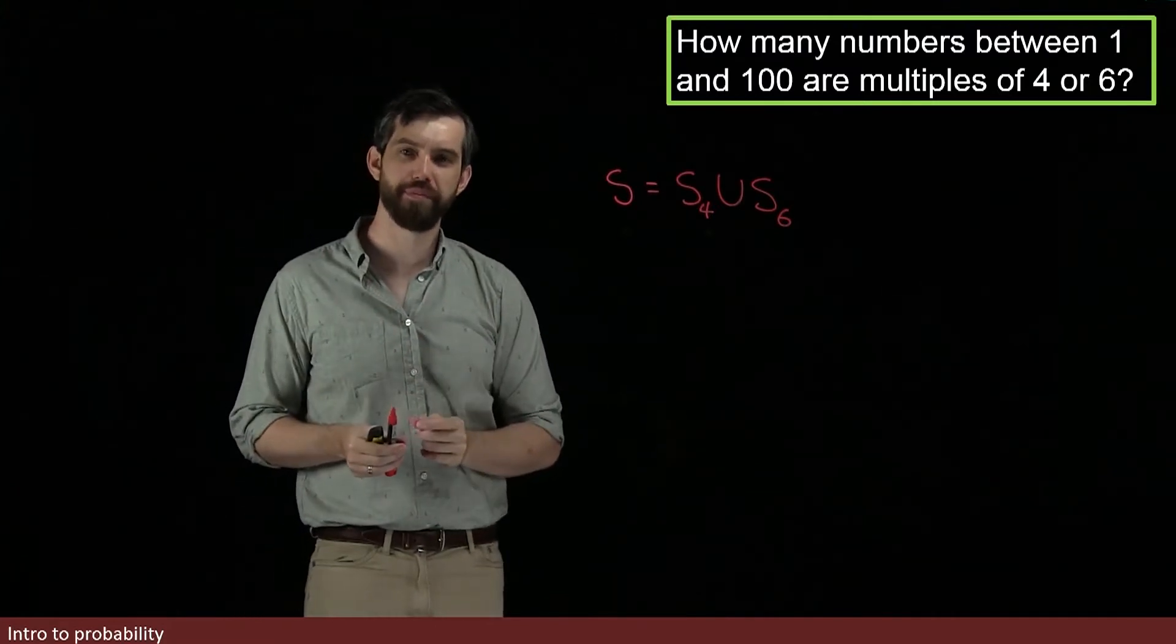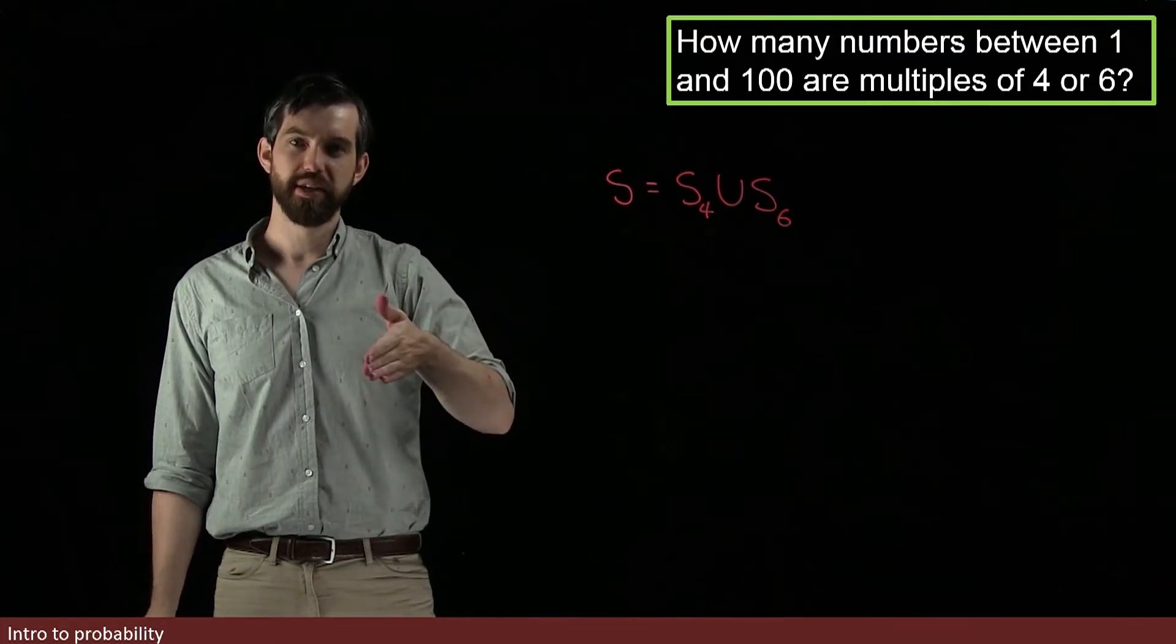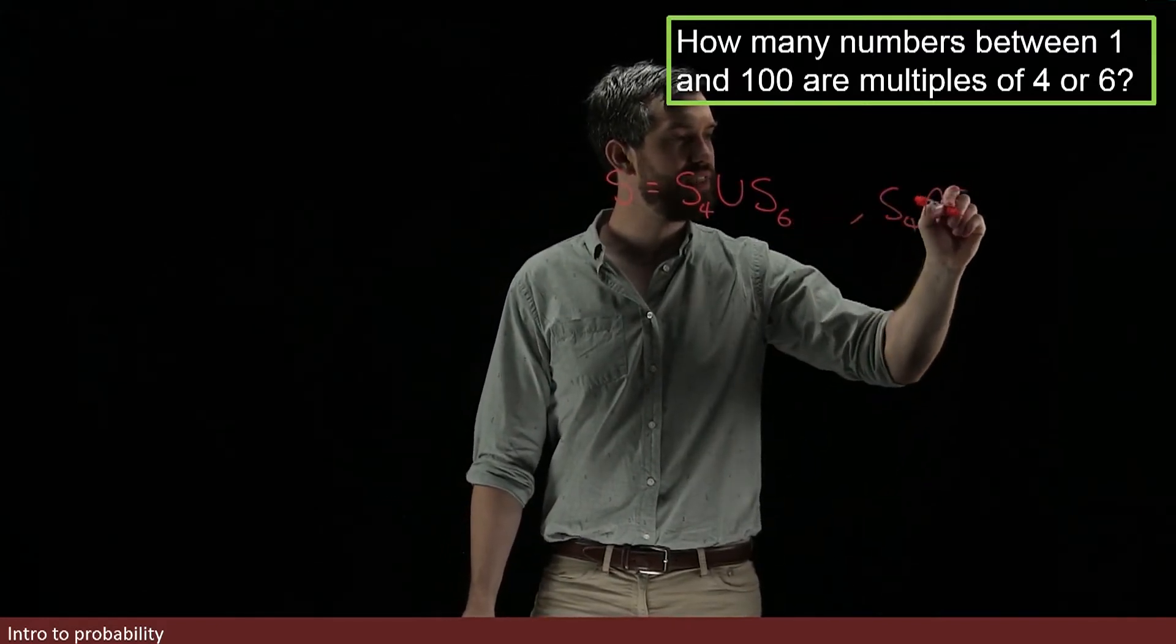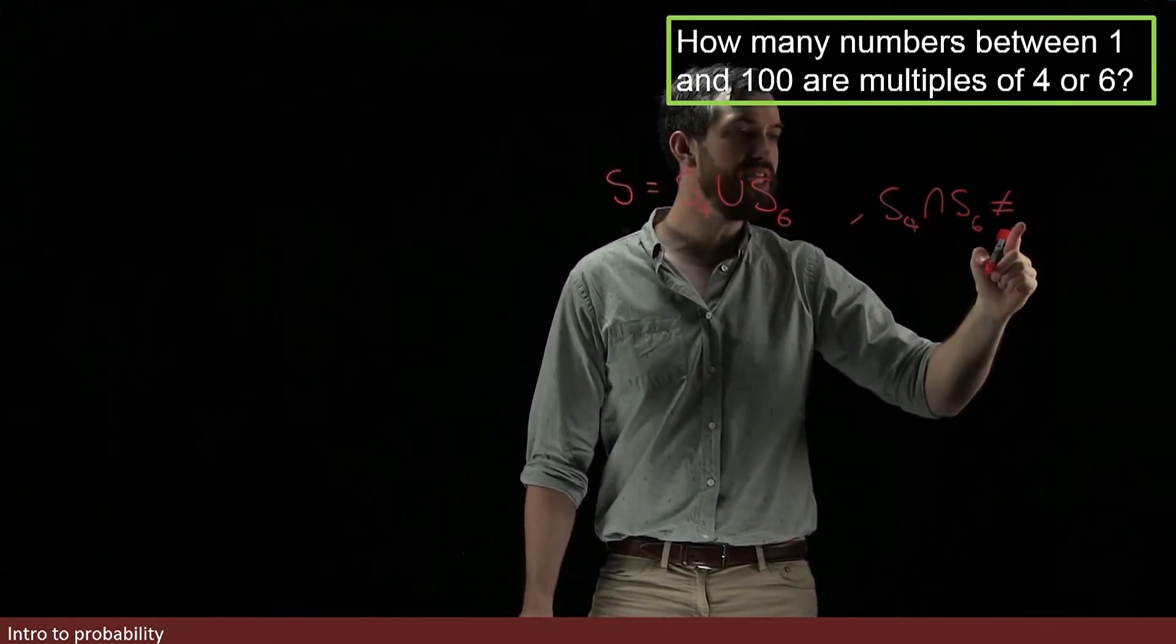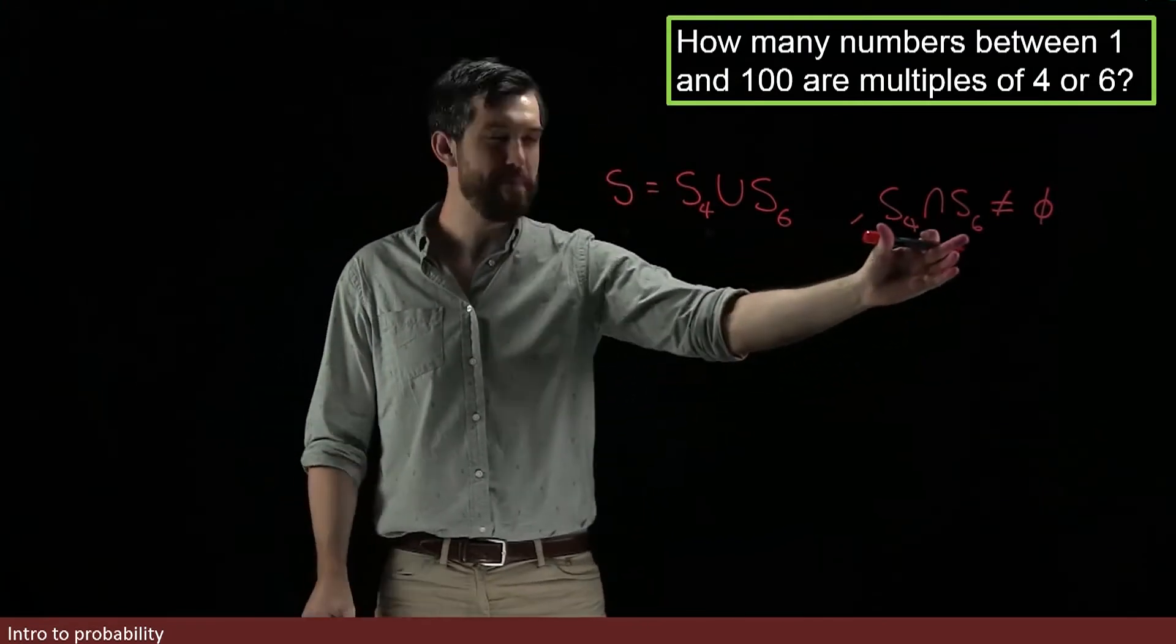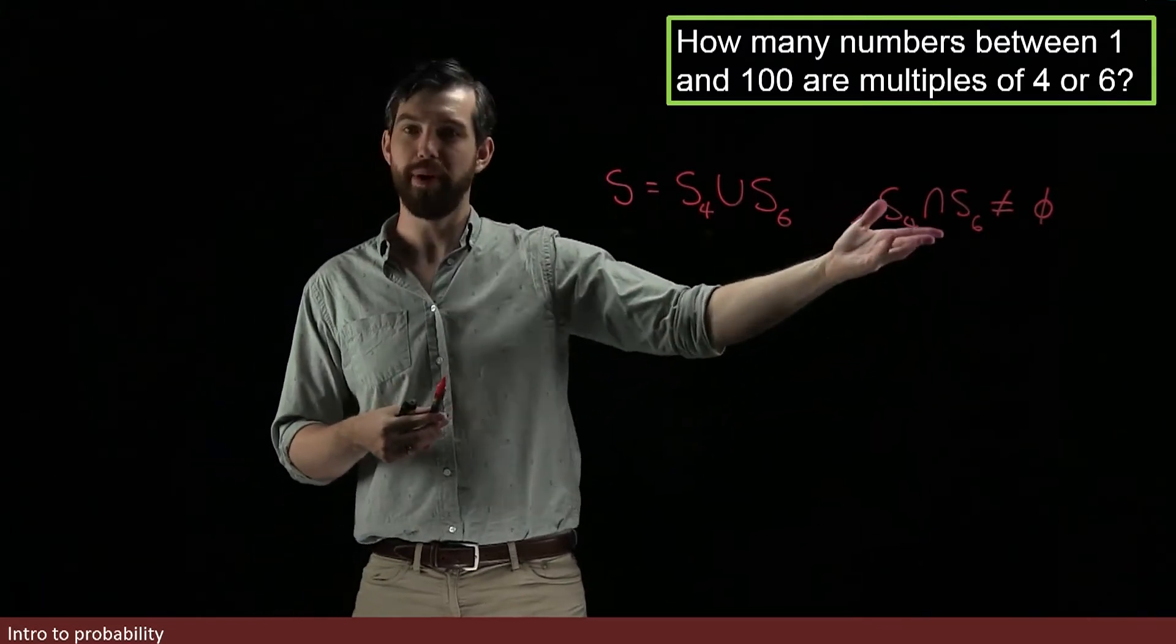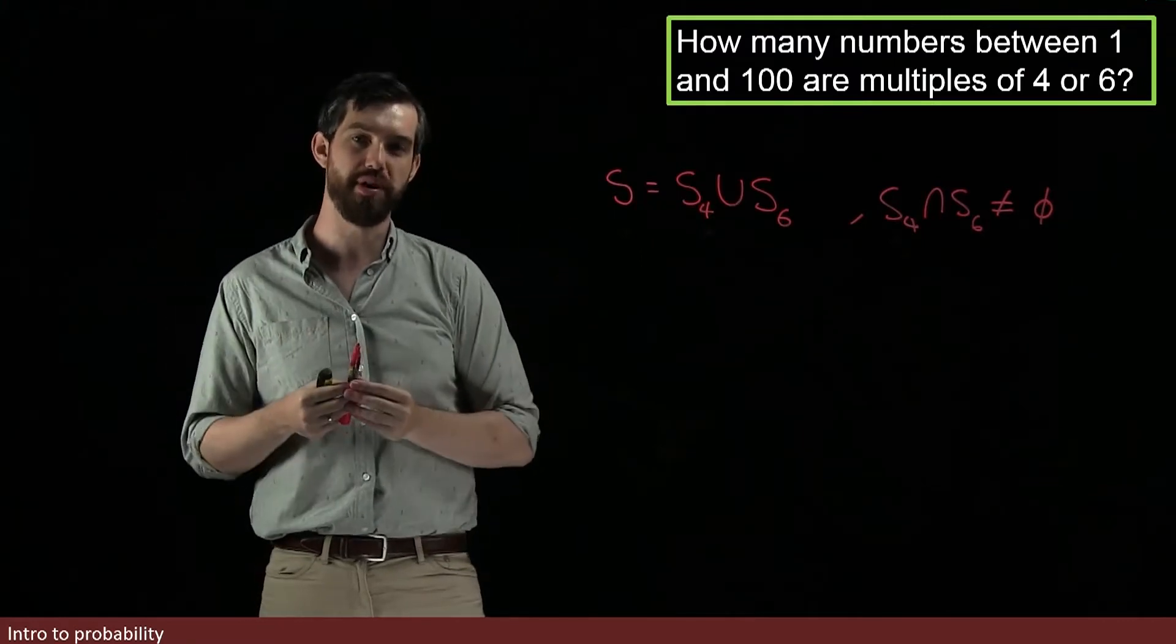For example, take the number 12. 12 is a multiple of 4, and 12 is a multiple of 6. So, we know that the S4 intersect the S6, that it is not equal to the empty set in its intersection. That there are elements in here. For example, 12 is in there, and 24 is in there, and 36 is in there. We could try to figure out all the different numbers that were in there, but clearly it is not empty. It is not a disjoint union that I have.